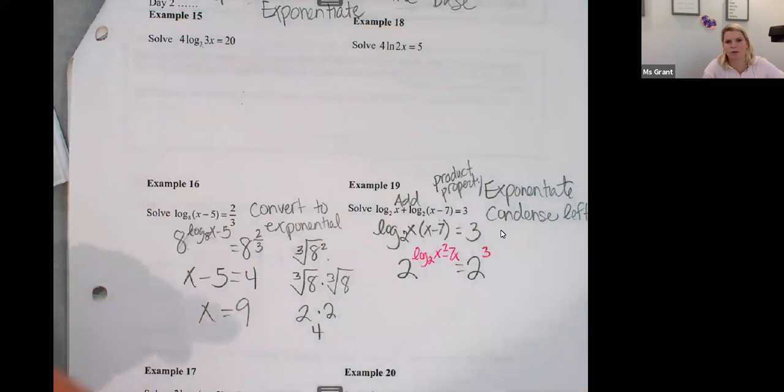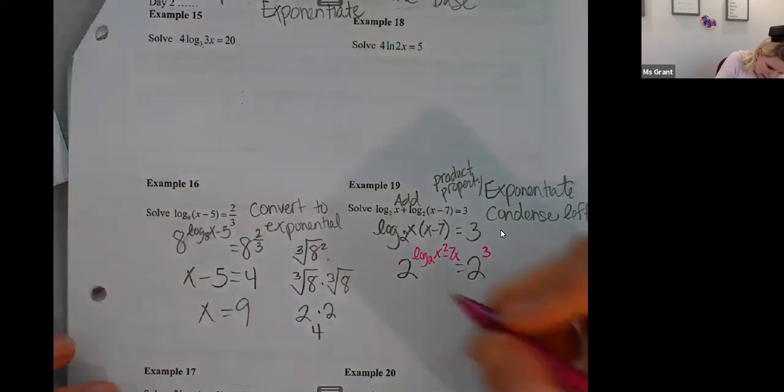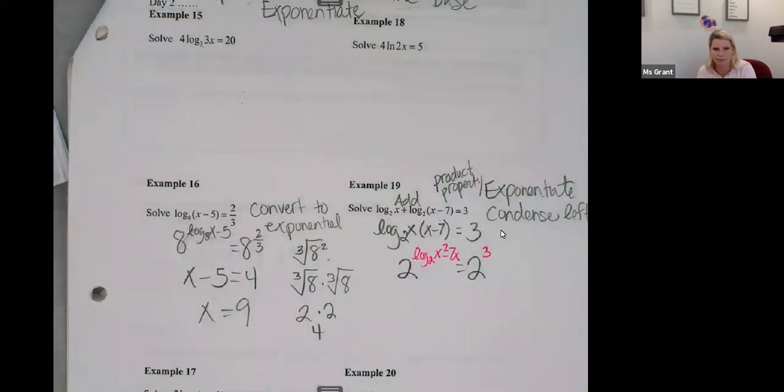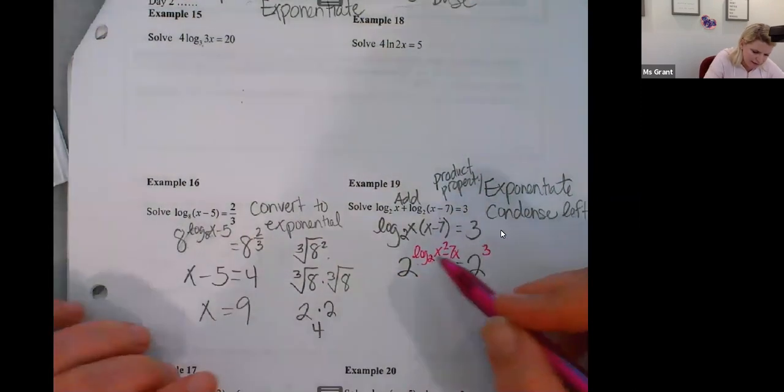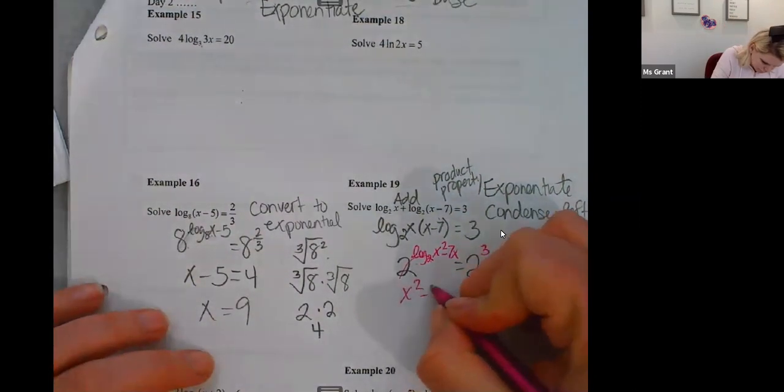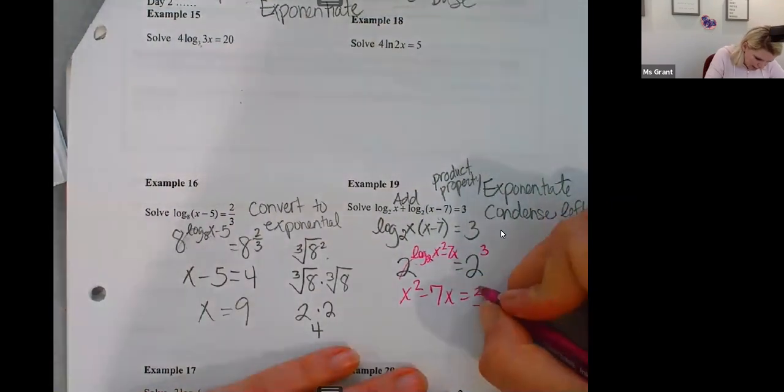And I can multiply x squared minus seven x. Which means we'll have you write it first. I don't want to go too fast. Log. Two raised to the power of log base two. That's the step that cancels. That was one of the properties we did. Oh, two to the third. Eight. Pardon me.